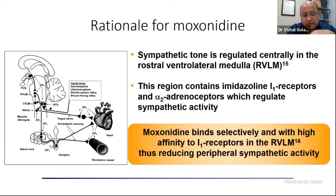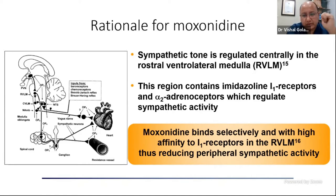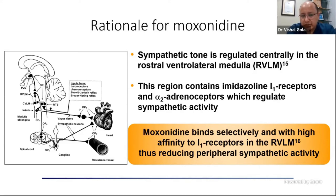Binding of peripheral alpha-2 adrenal receptors can actually overcome the central sympathetic activity reduction — this is seen with clonidine at very high doses, where it paradoxically causes an increase in sympathetic activity by binding peripheral alpha-2 receptors. That is why with clonidine we do not cross a threshold, because at higher levels it can cause a rise in blood pressure. This problem is not seen with moxonidine because it does not bind adrenal receptors to the same degree.